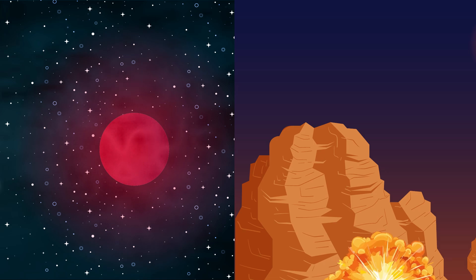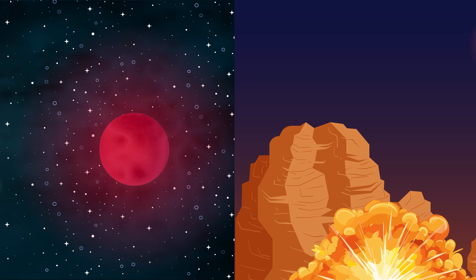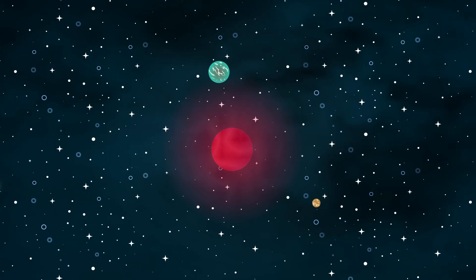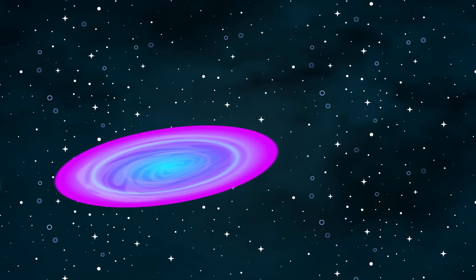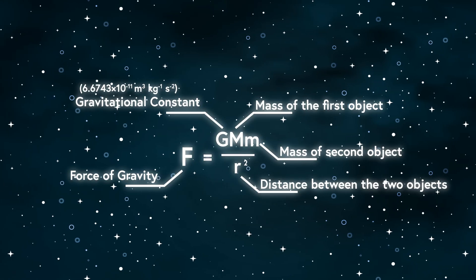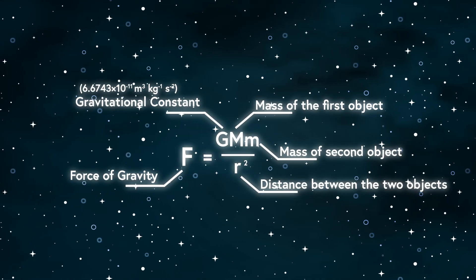But light isn't the only game changer. What about gravity? That's where things get even weirder. Gravity shapes the universe, influencing everything from planetary orbits to galaxy formation. But what if the gravitational constant G were different?